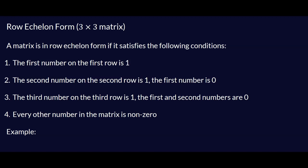Let's talk about the row echelon form in three-by-three matrices. Don't confuse this with the reduced row echelon form — this is just the row echelon form. The first number on the first row is one; the second row has a zero first and a one second; the third row has zeros in the first two positions and a one third. Every other number in the matrix is non-zero — call them A, B, C.